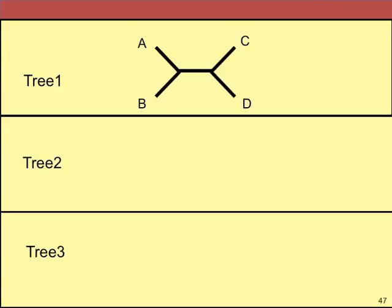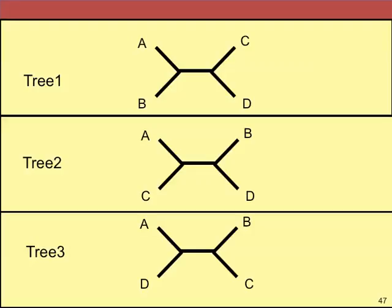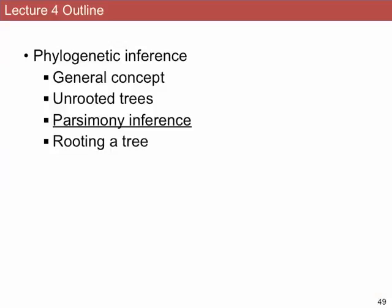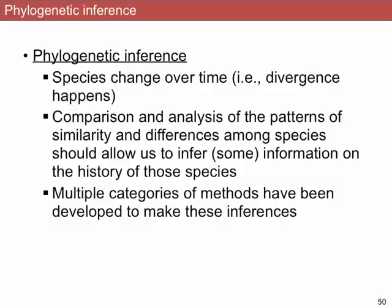Here are the three unrooted trees, now with the primate taxa: chimp, gorilla, human, and orangutan. Tree 1 has chimp and orangutan together sharing a node; tree 2 has gorilla and orangutan; tree 3 has human and orangutan. We're going to take these trees and try to compare them, score them, and pick — given a data set — which one is better than the others. We're going to use the parsimony method for phylogenetic tree reconstruction, comparable to what we did for character state reconstruction.